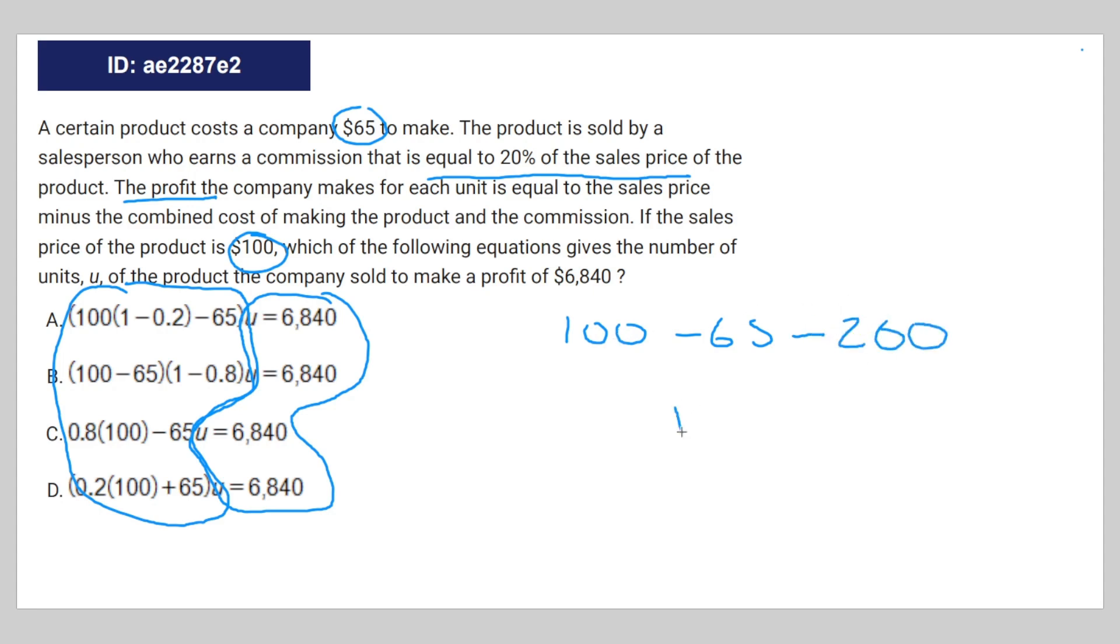So they make $15 profit for each product, which means that A is the correct answer. Because if you distributed the 100 into the 1 and the 0.2, you're going to get this equation, which is 100, minus 20, minus 65.